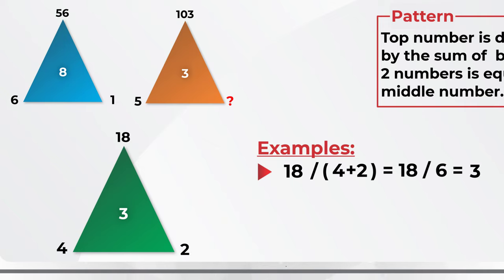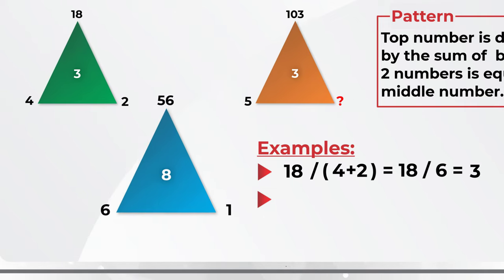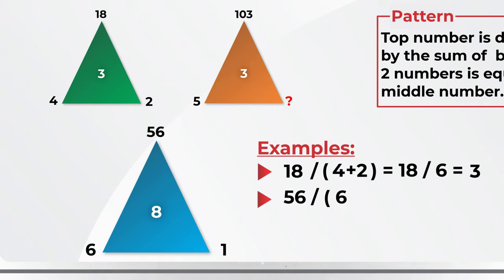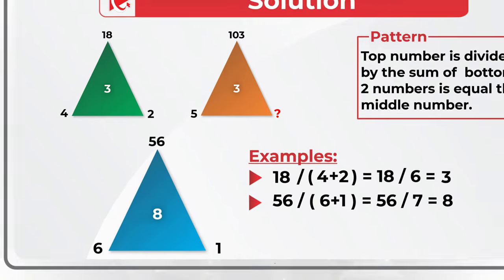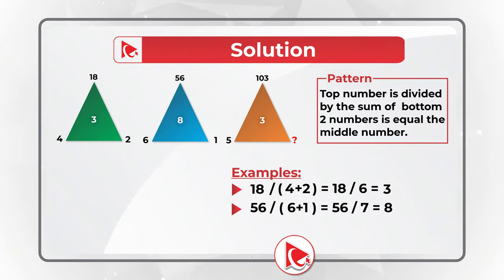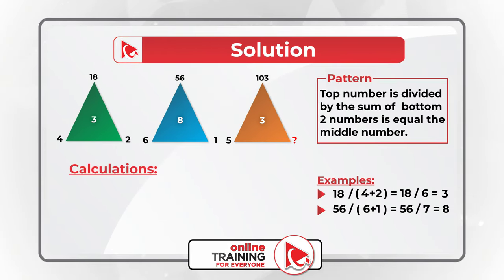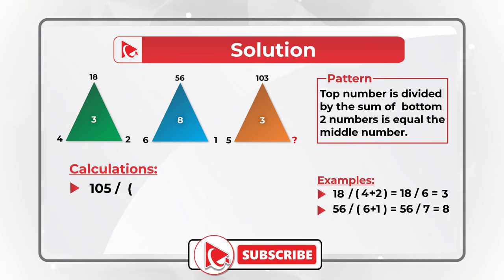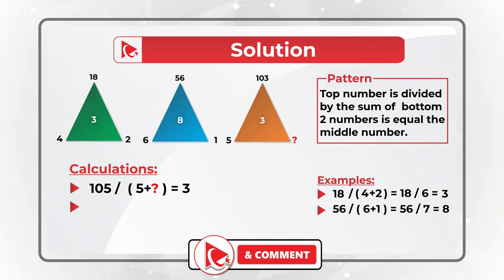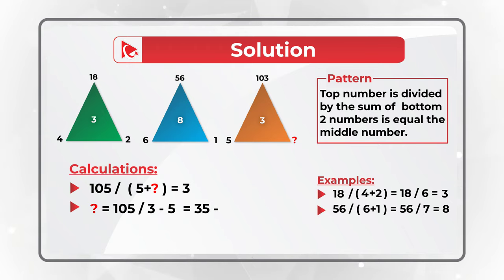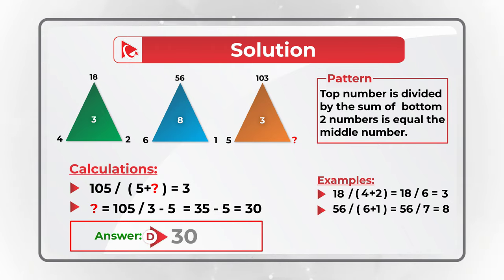In the second triangle: 56 divided by (6 plus 1) equals 56 divided by 7, which equals 8. So to calculate the missing number, we build the equation: 105 divided by (5 plus the missing number) equals 3. We divide 105 by 3 and subtract 5: 35 minus 5 equals 30. The answer is choice D, 30.